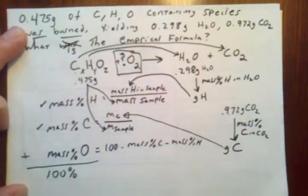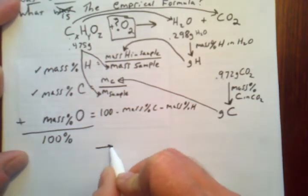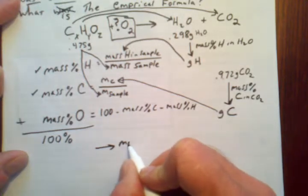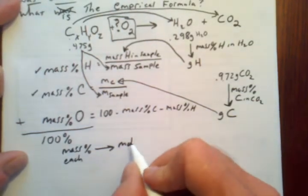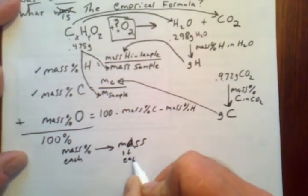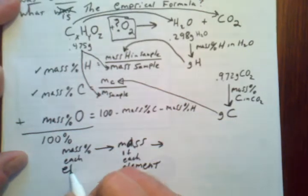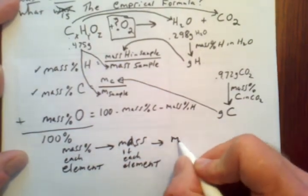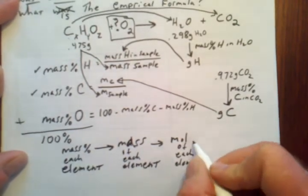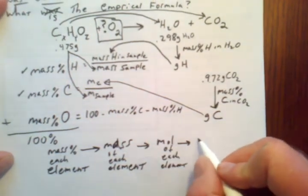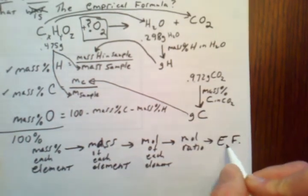Once we know the mass percents of hydrogen, carbon, and oxygen, we can take those mass percents and convert them into a mass of each element, then convert those masses into moles of each element, then convert moles into a mole ratio, which gets us to our empirical formula.